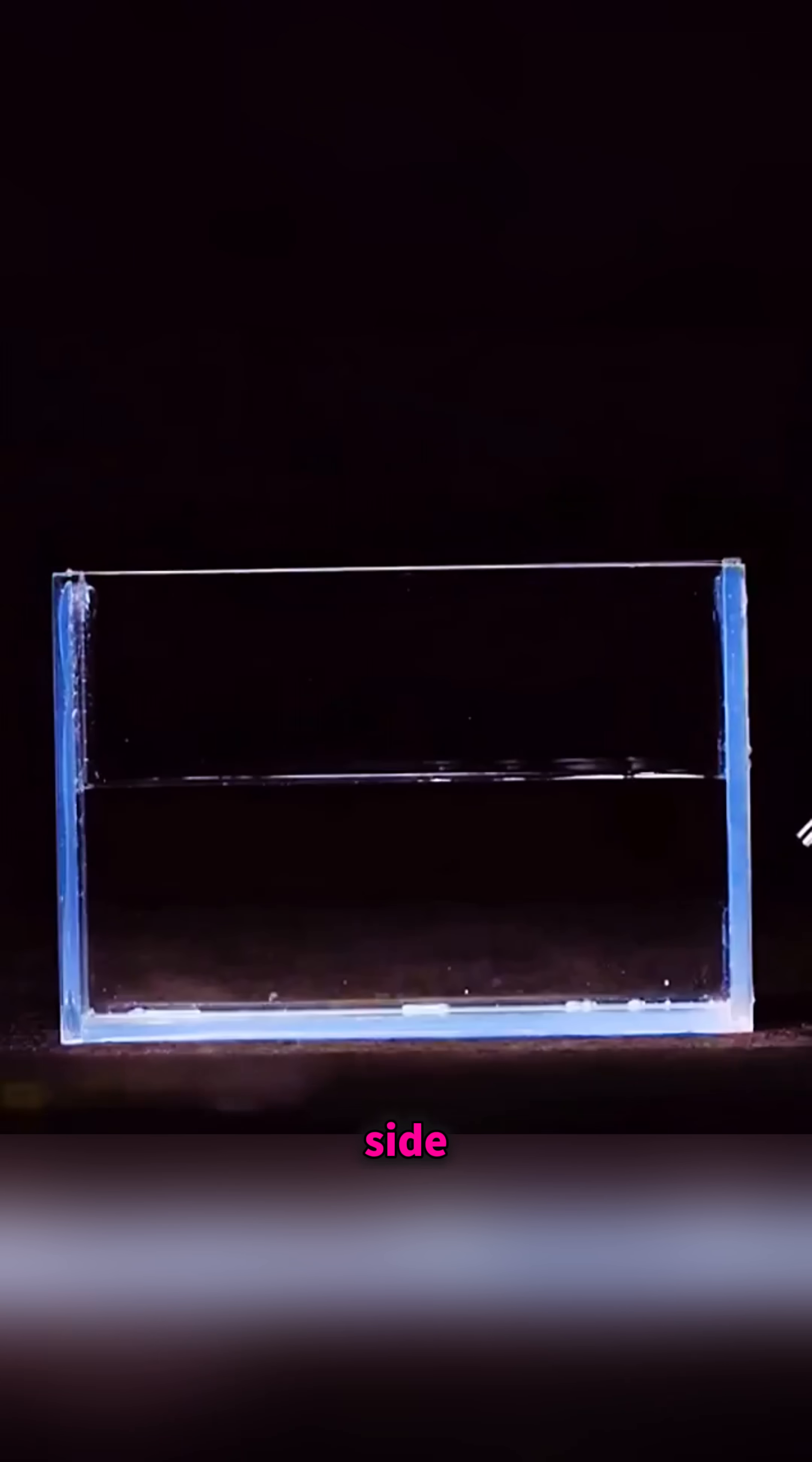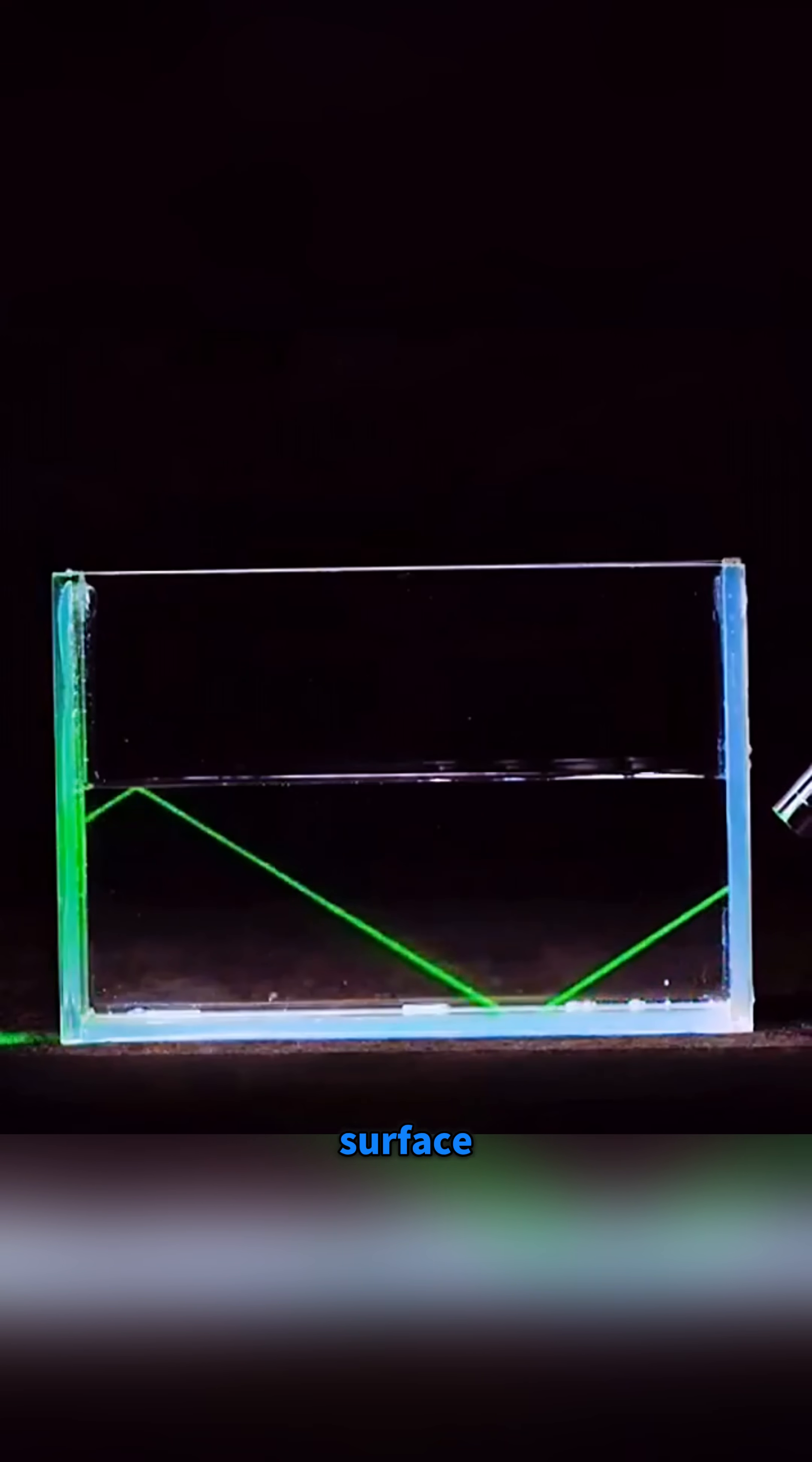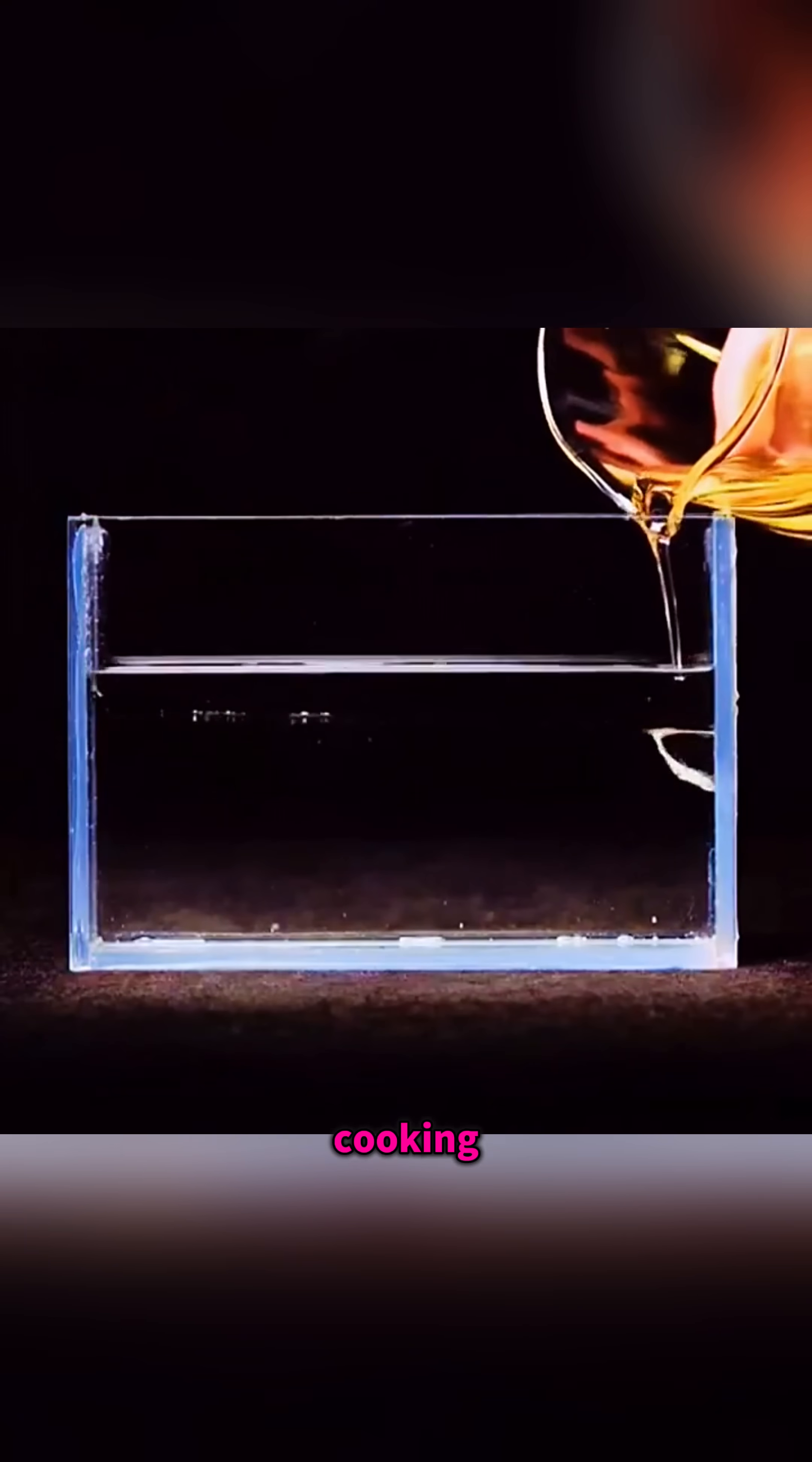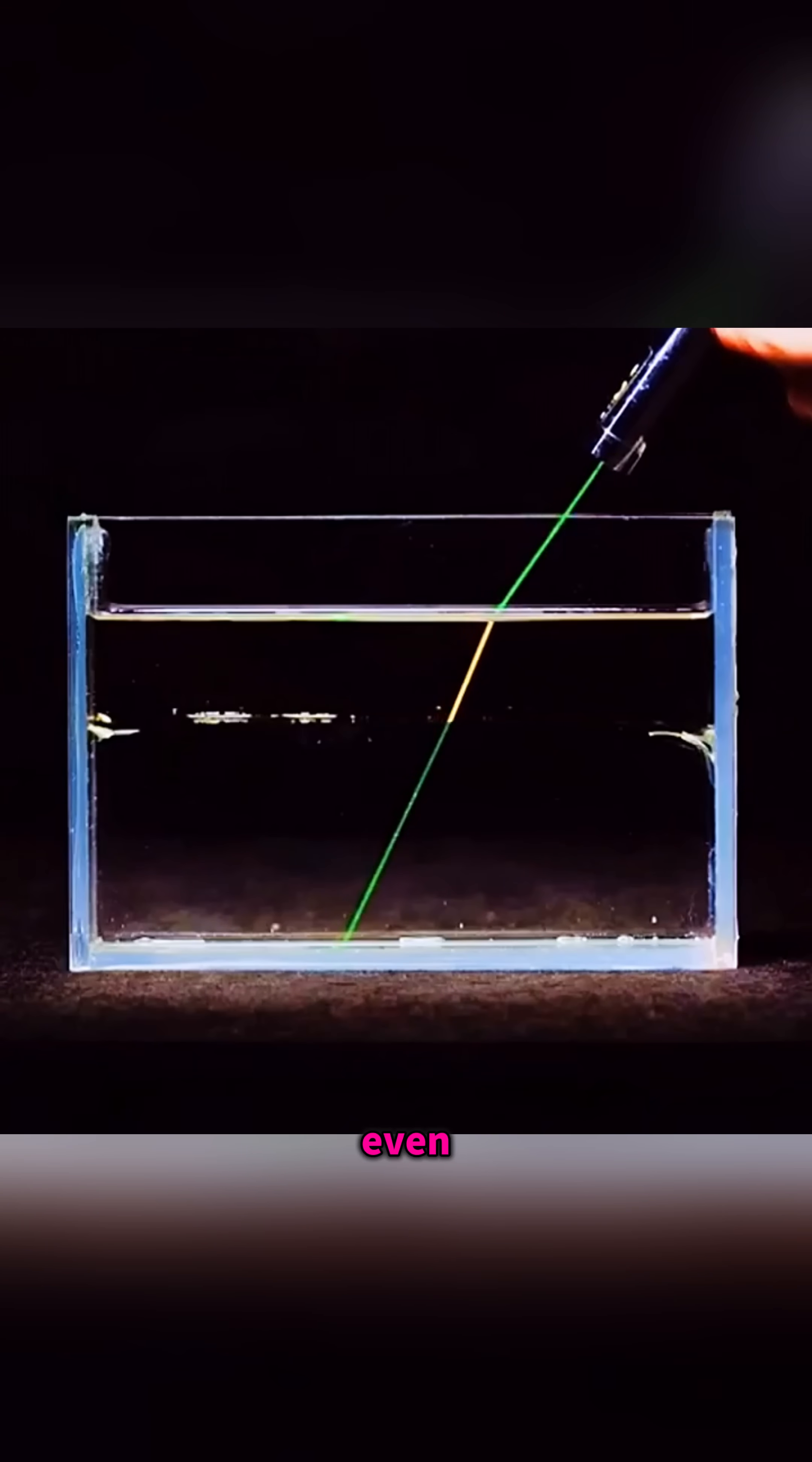Pour half a tank of water into a glass container, shine a laser from the side, and you can clearly see the light reflecting continuously along the bottom and surface of the water. Then add some cooking oil and shine the light from above. The beam splits into green and yellow and even bends.